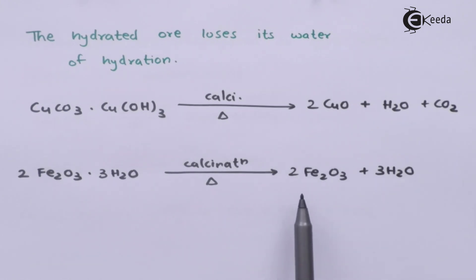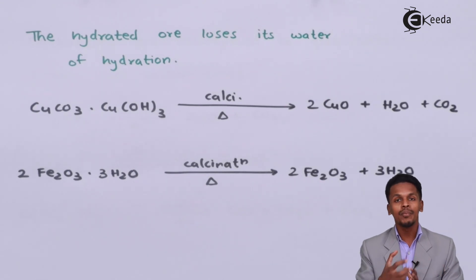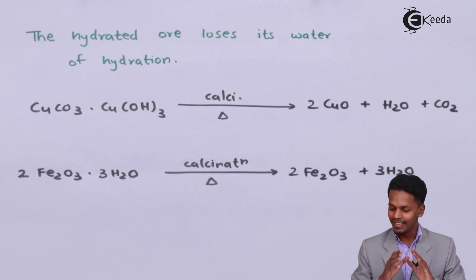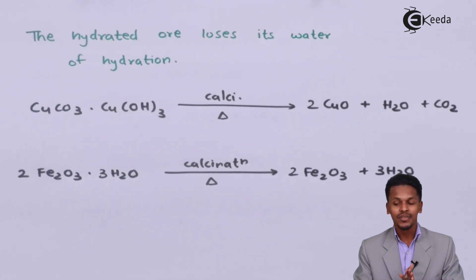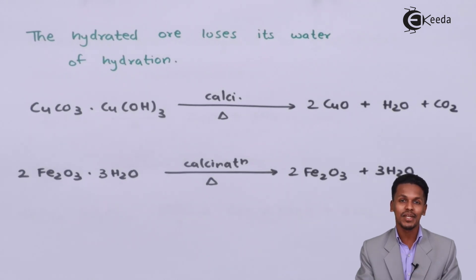This is how we convert particular carbonates into their corresponding metal oxides. This is the most important process by which we can remove impurities. Roasting and calcination are the chemical processes of concentration of ore. Thank you friends for watching — I hope you understood this video clearly. See you next time, don't forget to subscribe to the Ekeeda channel.